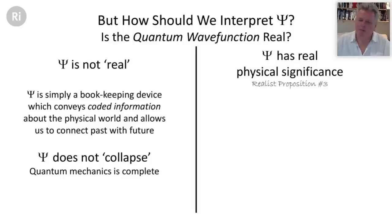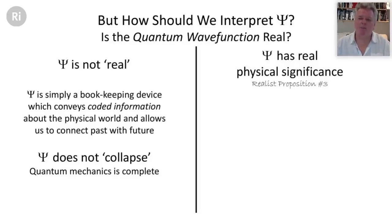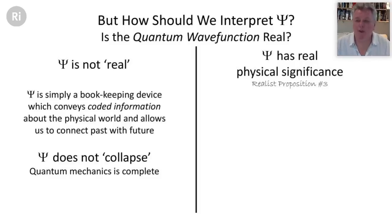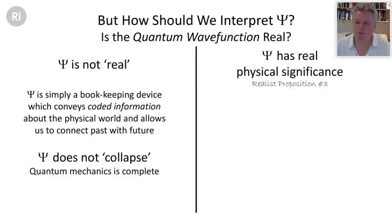This means the wave function doesn't actually collapse, because there's nothing to collapse — it's not a physical thing. It effectively represents the change in our state of knowledge about the electron or Schrödinger's cat. All that happens when we lift the lid of the box is our state of knowledge changes: before lifting, we'd say the cat could be alive or dead, in a superposition of both. When we lift the lid, we discover it's dead — or alive.